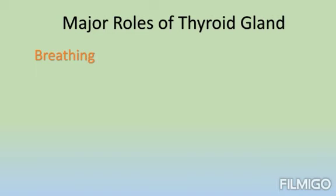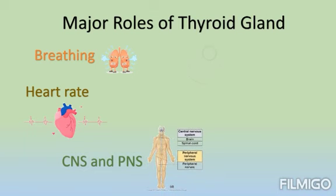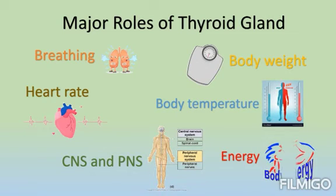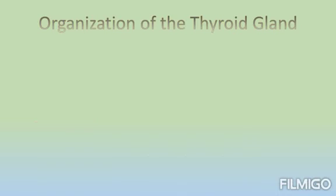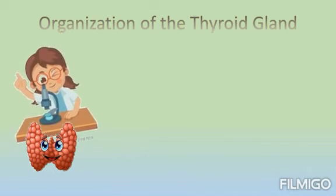So the thyroid gland interferes in metamorphosis. Other major roles of the thyroid gland include involvement in breathing, as well as regulating your heart rate and heartbeats. Also, the thyroid gland plays a role in controlling the central and peripheral nervous systems, as well as your body weight, body temperature, and the energy produced and consumed by your body.